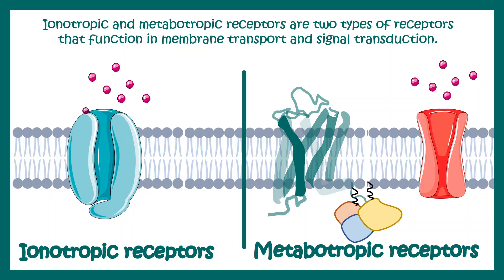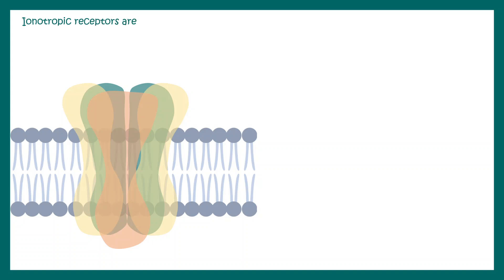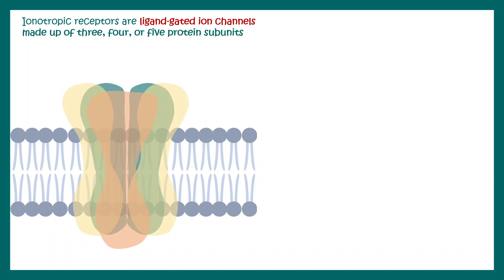In this video we'll talk about ionotropic and metabotropic receptors. These are two types of receptors found in membranes which are involved in transport and signal transduction. Let's talk about ionotropic receptors first. Ionotropic receptors are ligand-gated ion channels which are made up of three, four, or five subunits.